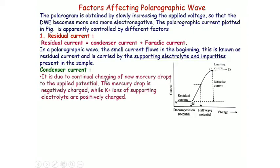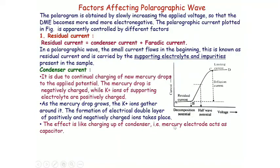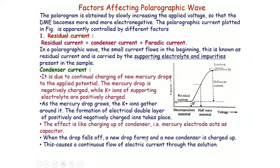Condenser current is due to the continual charging of new mercury drops to the applied potential. The mercury drop is negatively charged. Taking KCl as the supporting electrolyte, a large excess of KCl is used, so the concentration of K⁺ ions is also large. As the drop comes out through the capillary it is negatively charged, and K⁺ ions gather around it, forming an electrical double layer — this acts like charging a capacitor, so the mercury electrode acts as a capacitor.